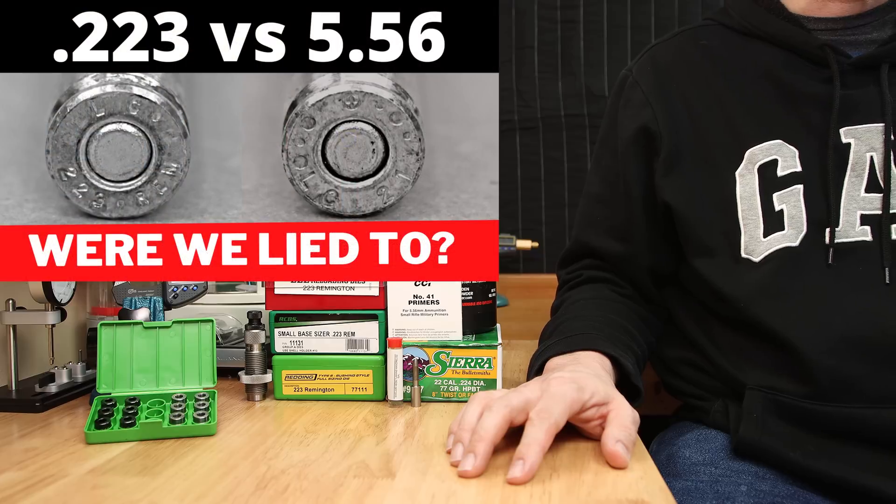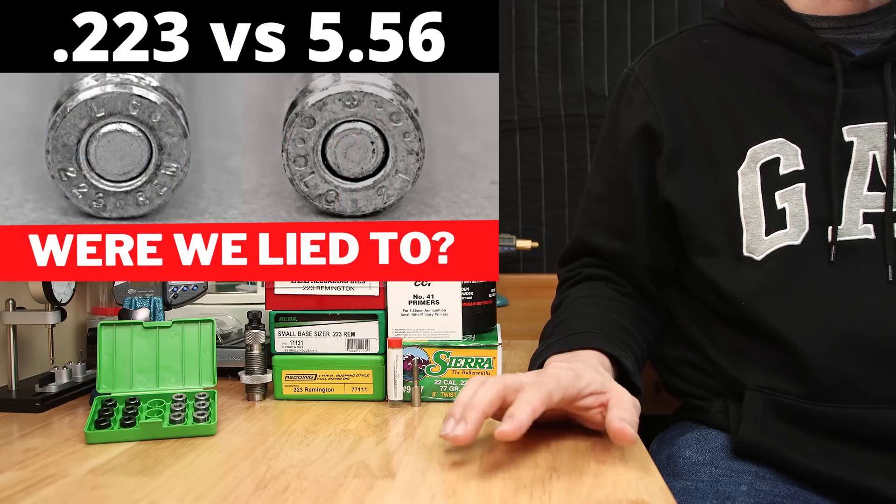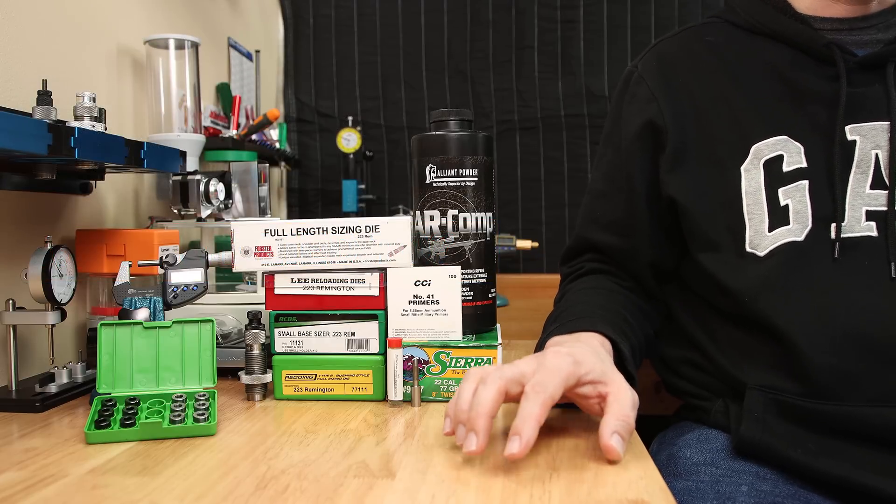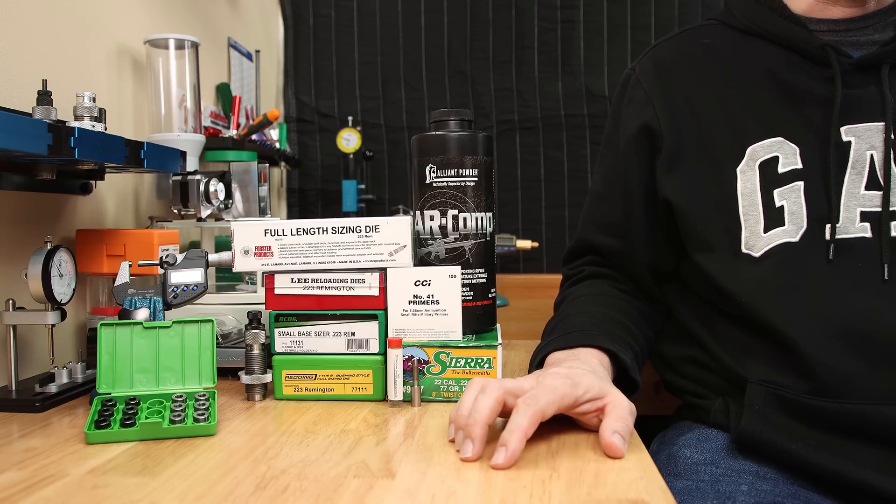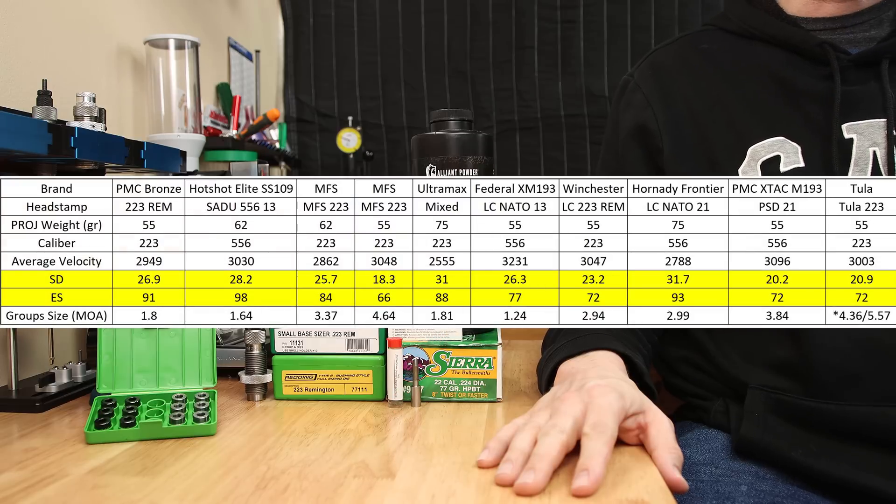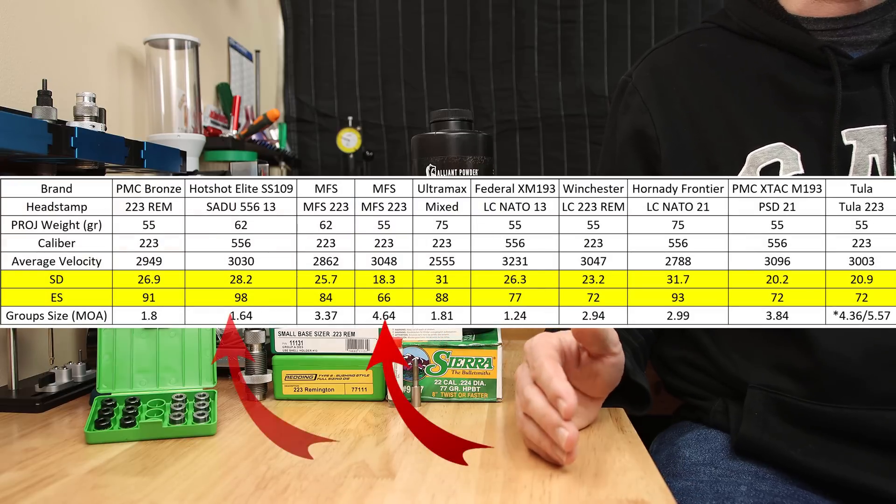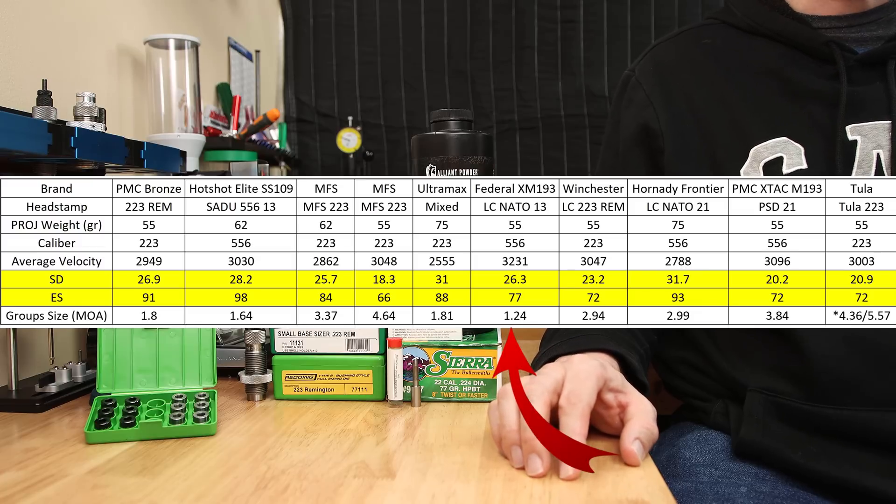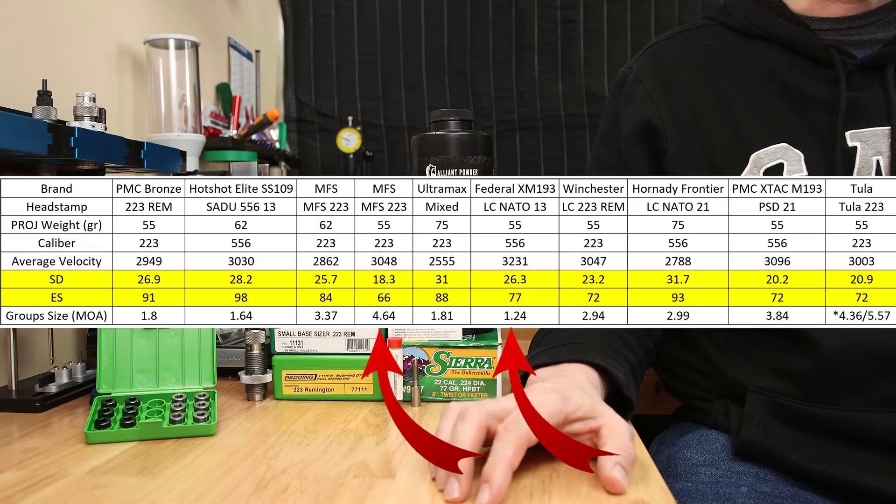In my .223 vs .556 comparison of factory ammo we cast a wide net and tested 10 different rounds of 10 different factory offerings in 55 grains all the way to 75 grains. Accuracy and velocity performance was all over the place. The extreme spreads varied from 66 all the way to almost 100 feet per second, while accuracy went from somewhere around 1.24 MOA all the way to well over 4 MOA for some of our groups.